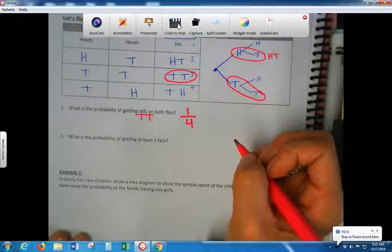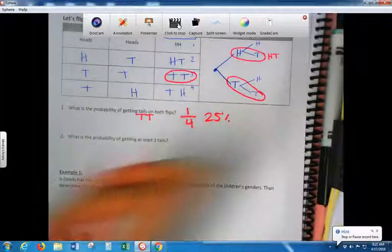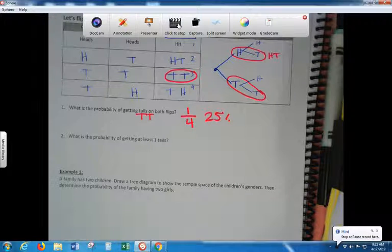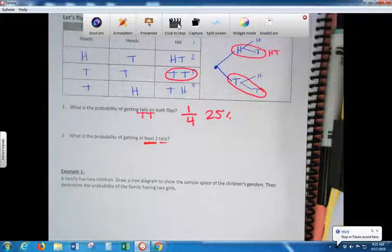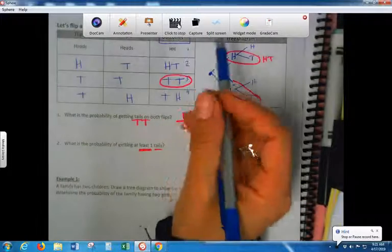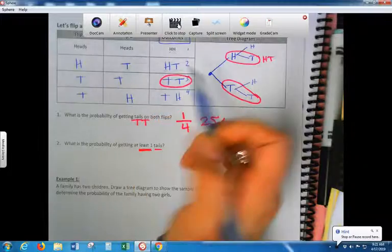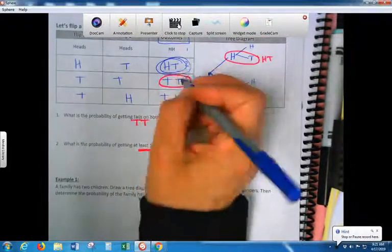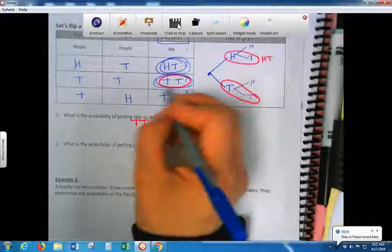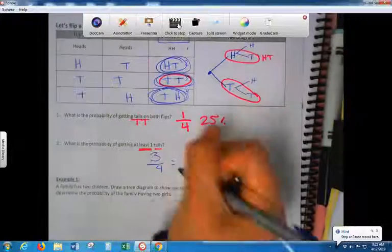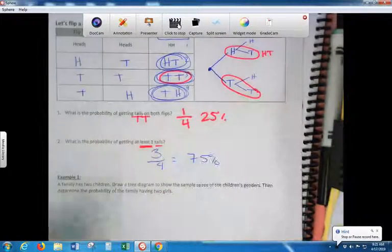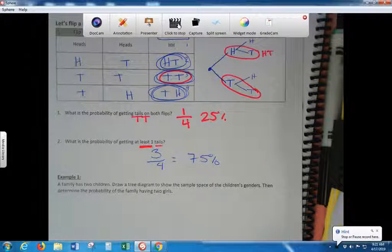What is the probability of getting at least one tail? Do I have a tail here? No. Do I have a tail here? Yes. Do I have a tail here? Yes. Do I have a tail here? Yes. How many have at least one tail? Three. Three. Which is equal to what percent? Three. They're circled in blue. At least one tail. So you go back and go, okay, how many times did at least the tail represent?